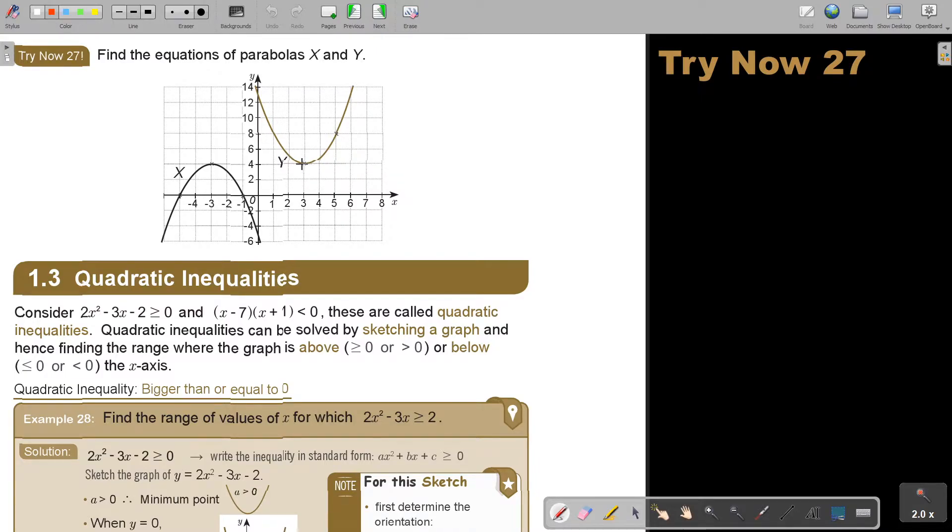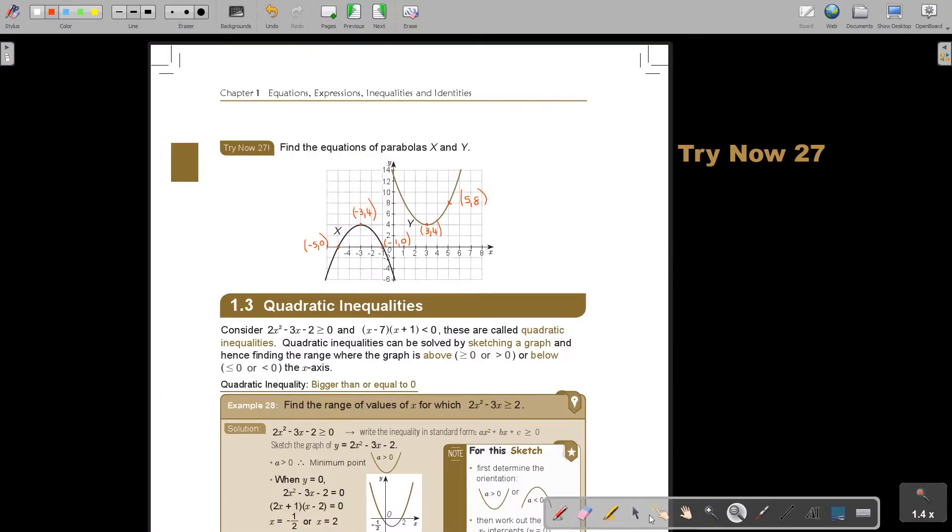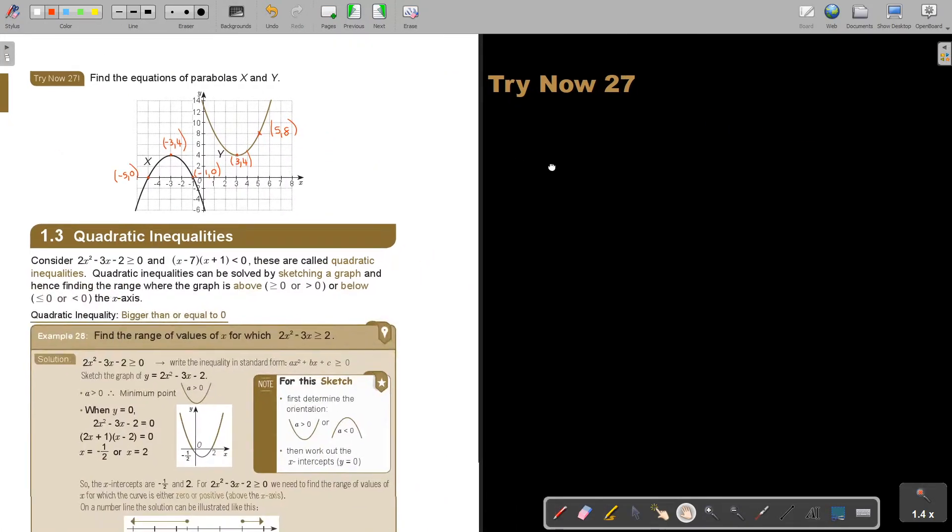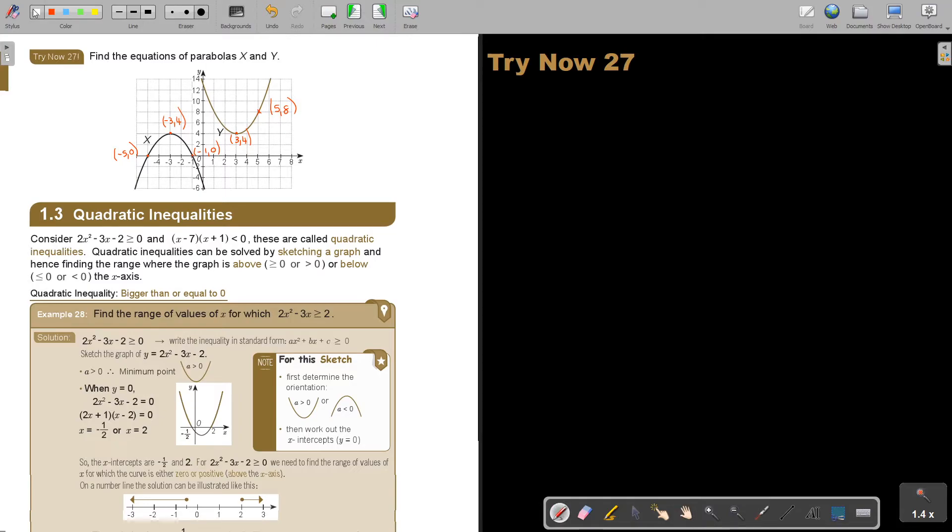Maybe I'm just going to highlight the points. For this one, I think I can use the x-intercepts. So it's negative 5 and 0, and negative 1 and 0. This one is negative 3 and 4. And then this one is 3 and 4. The extra point is 5 and 8. With that information, I think it's enough to do this example. Let's start with Try now 27.